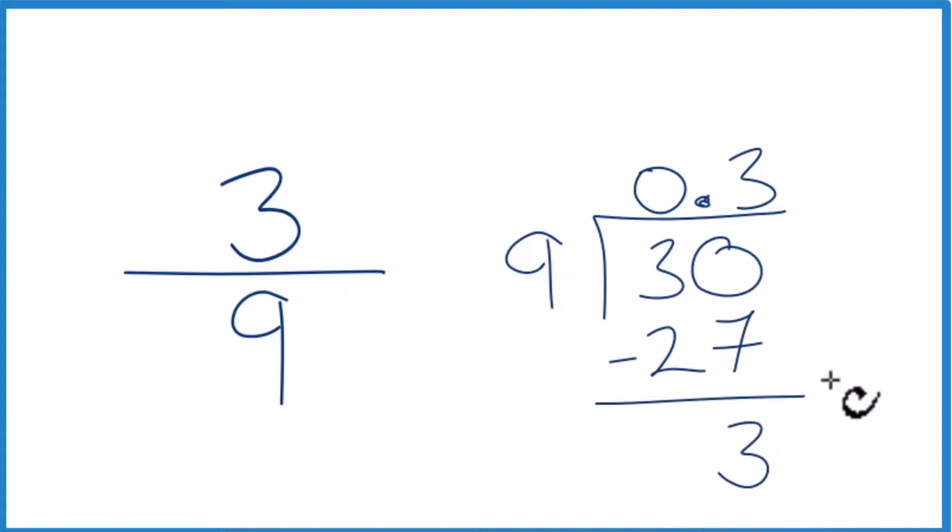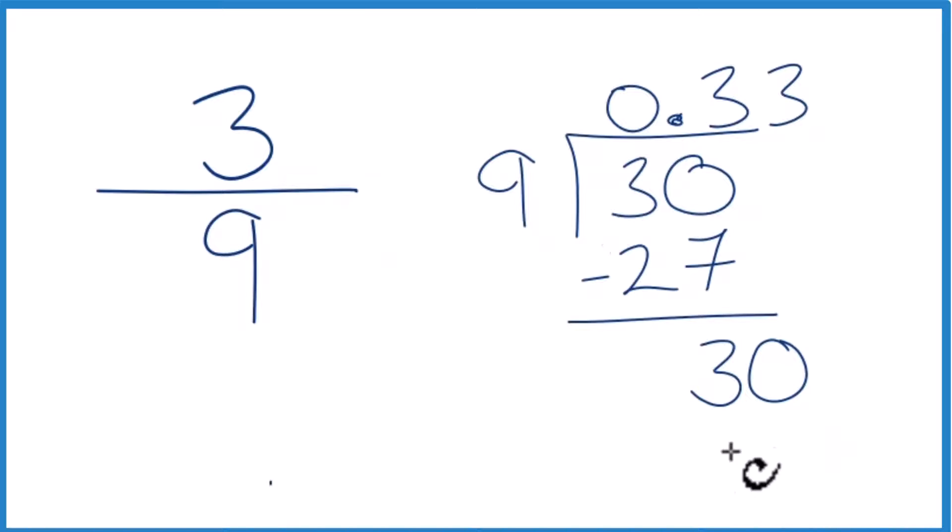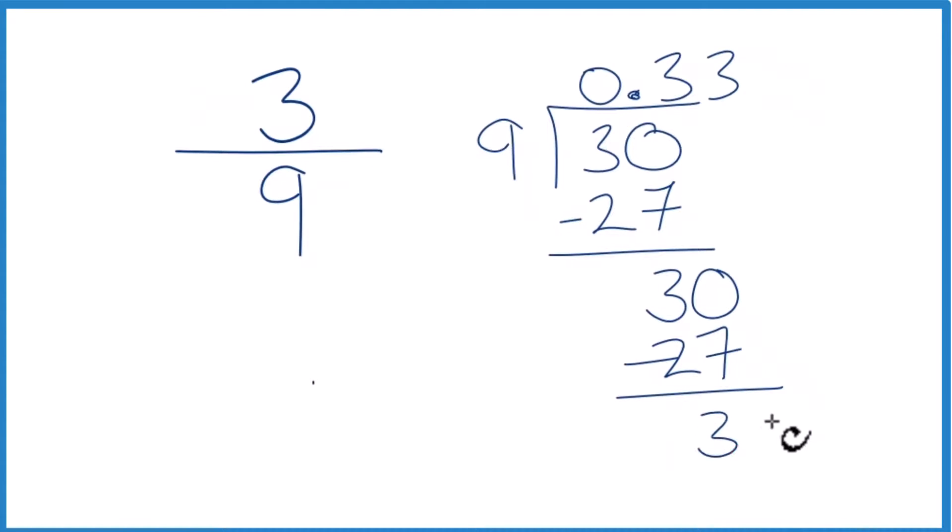Subtract we get 3. We'll call it 30, move over 1, 3 times 9 is 27. We subtract, we get 3, call it 30, move over 1, 3 times 9 is 27, and so on.